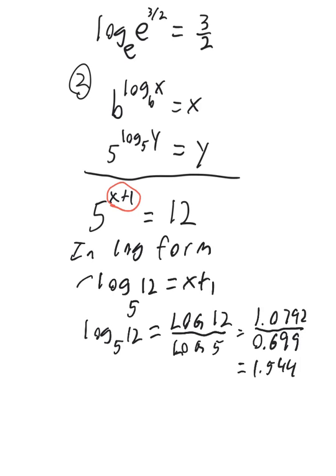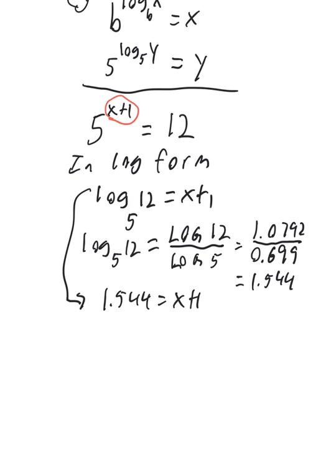Now that's what this is. So I get 1.544 is equal to x plus 1. And then just subtract 1 from both sides. So 0.544, that's my solution for x.